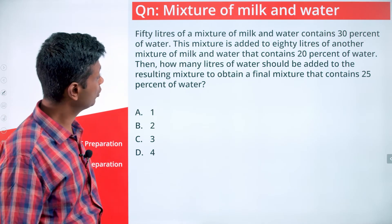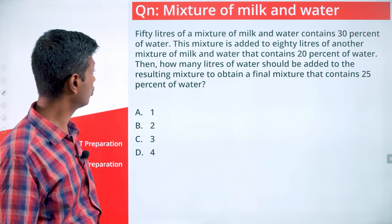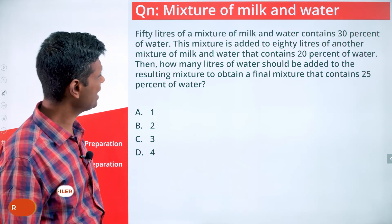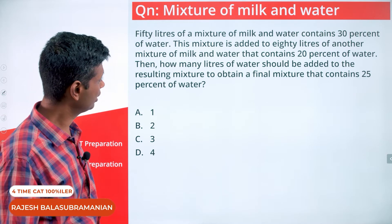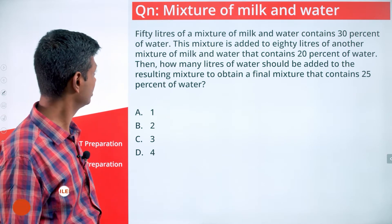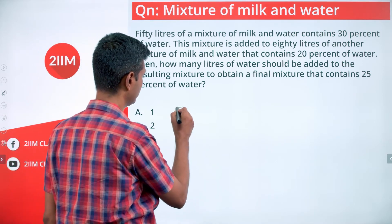50 liters of a mixture of milk and water contains 30% of water. This mixture is added to 80 liters of another mixture of milk and water that contains 20% of water.